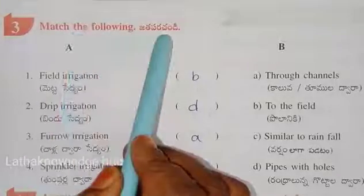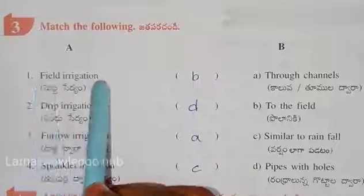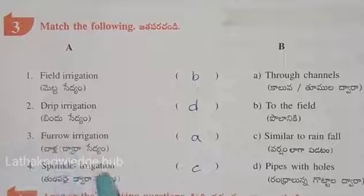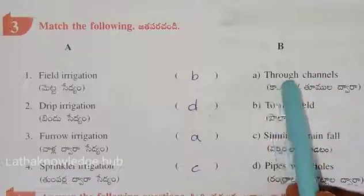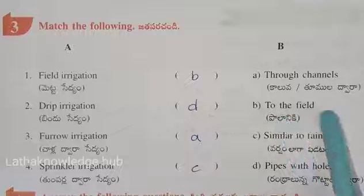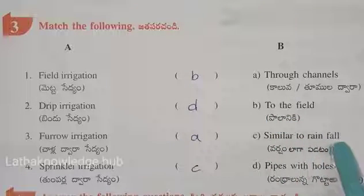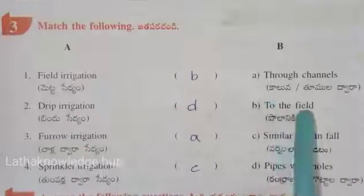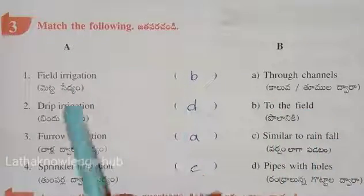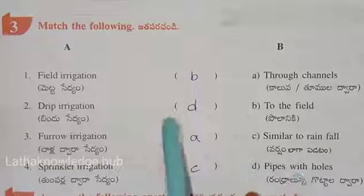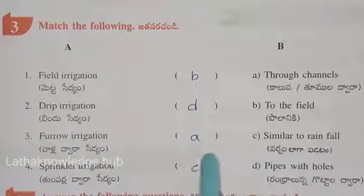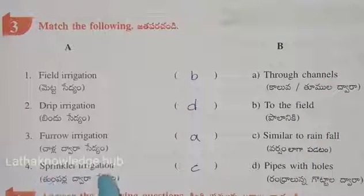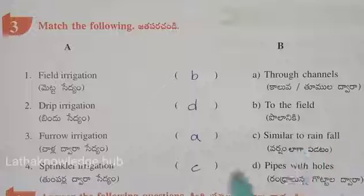Match the following. Field irrigation - water is sent through channels to the field, so option B. Drip irrigation - pipes with holes. Furrow irrigation - through the channels. Sprinkler irrigation - similar to rainfall, option C.